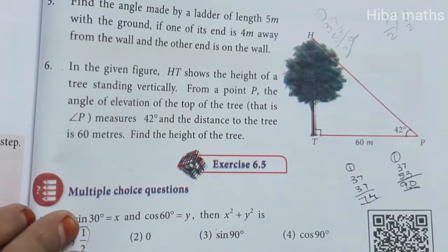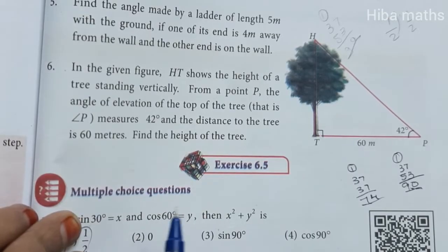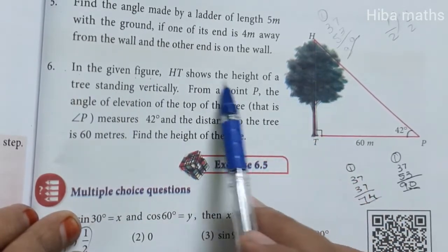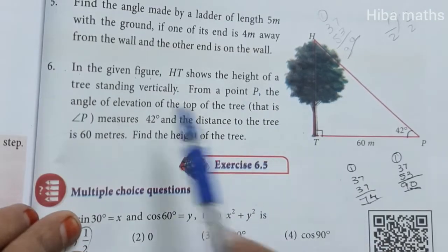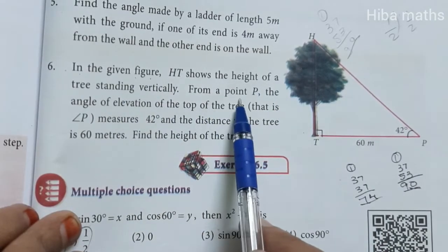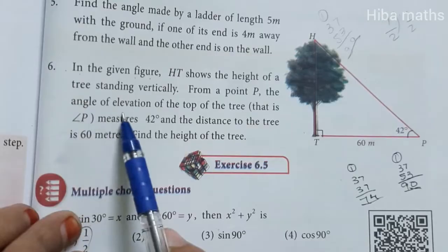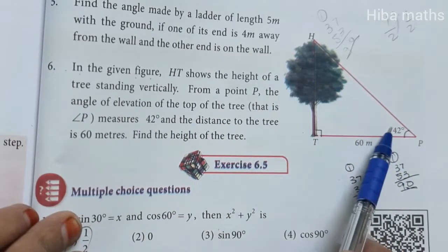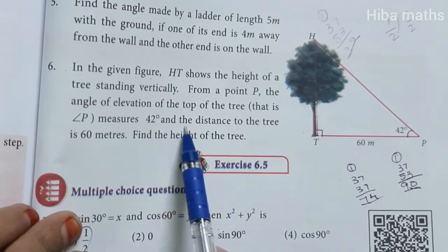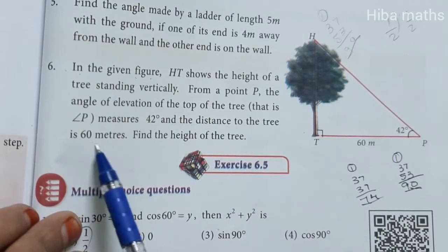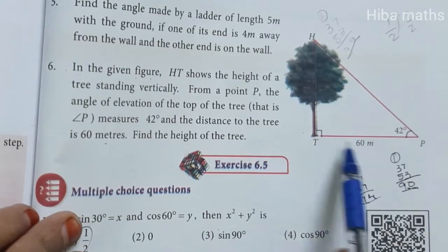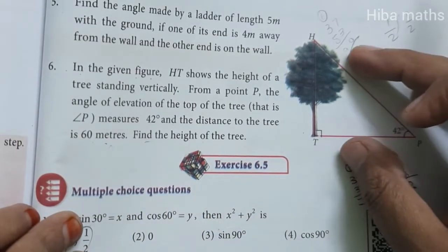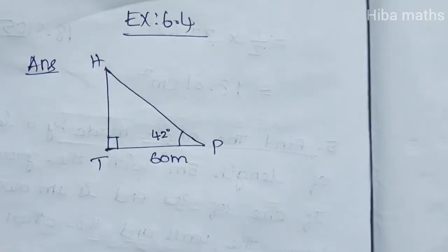Hello students, welcome to Hibamax Exercise 6.4. Here is the question: in the given figure, HT shows the height of the tree standing vertically. From a point P, the angle of elevation of the top of the tree is 42 degrees, and the distance to the tree is 60 meters. Find the height of the tree.